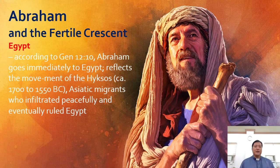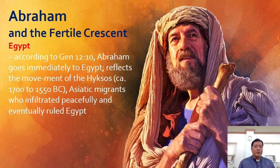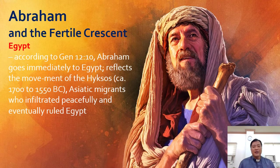According to Genesis 12:10, Abraham goes immediately to Egypt. He reflects the movement of the Hyksos — Asiatic migrants who infiltrated peacefully and eventually ruled Egypt. There is a theory that the Hyksos were actually the Hebrews.